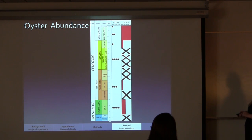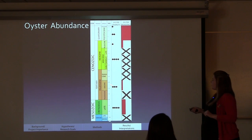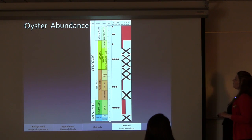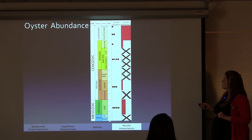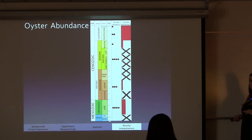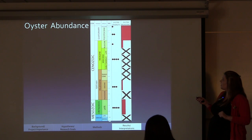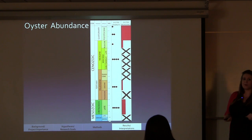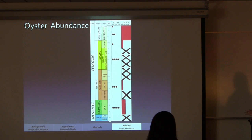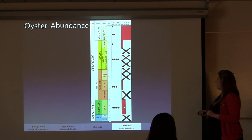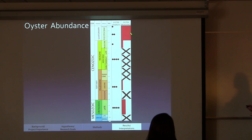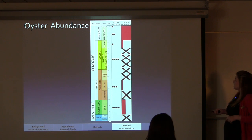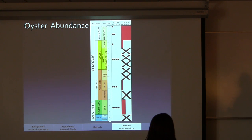Looking at oyster abundance and diversity, we plotted the number of species found within different ages. The late Cretaceous, Eocene, and Miocene all have fairly large diversity of oysters. Once we get into the Pliocene, Pleistocene, and Holocene, we see a decrease in the number of species. Looking at abundance, we see higher abundance of oysters in our samples for the Pleistocene and Holocene, and lower abundances in the Cretaceous, Eocene, and Pliocene communities.